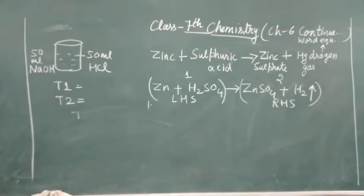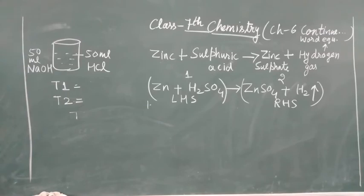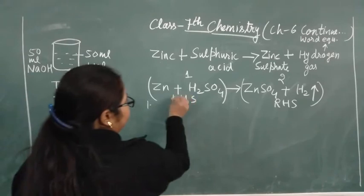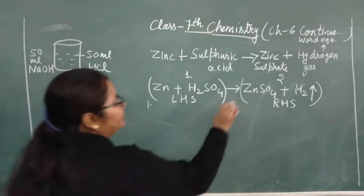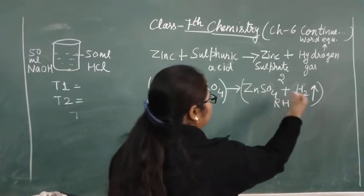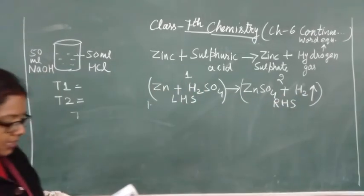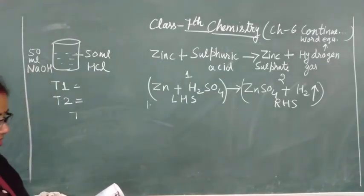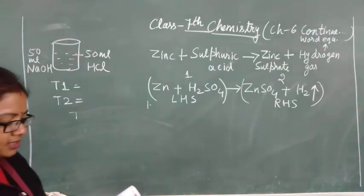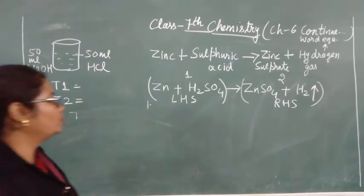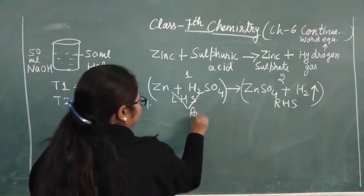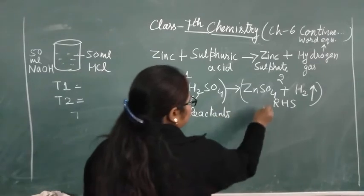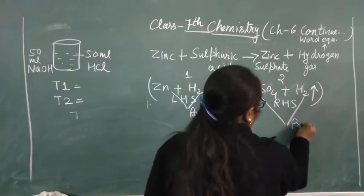The second information is that the reactants are always written on the left hand side and the products are always written on the right hand side. In the above chemical equation, zinc and concentrated sulfuric acid are the reactants, and zinc sulfate and hydrogen gas are the products.